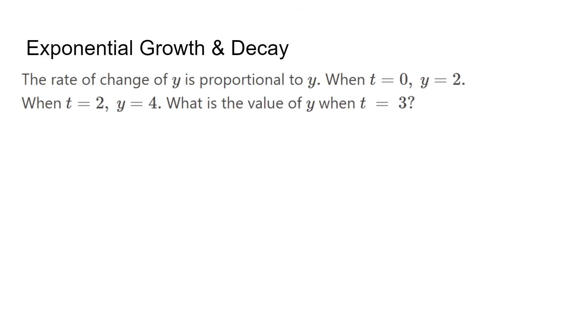C would be the initial value of y, such as a starting population of 100,000 people.